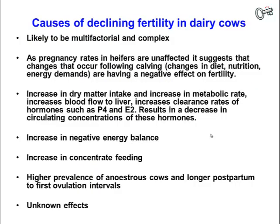What are some of the causes of this decline in fertility in dairy cows? People are still trying to work that out, but it's likely to be multifactorial. Because pregnancy rates of heifers are not affected, it suggests that changes following calving — changes in nutrition, diet, and energy demands — are key. These cows are genetically geared to produce high volumes of milk, which places a large energy demand on them, exacerbating a negative energy balance. Heifers may not be exposed to this as maiden heifers, but as soon as they calve they face a much greater negative energy balance and the liver becomes much more metabolically active.